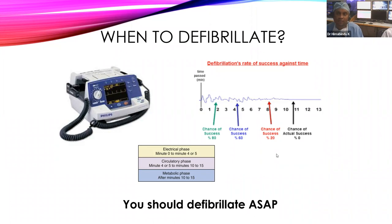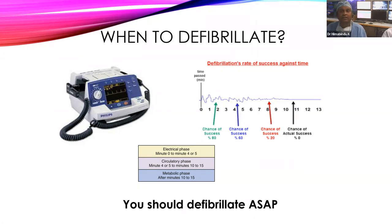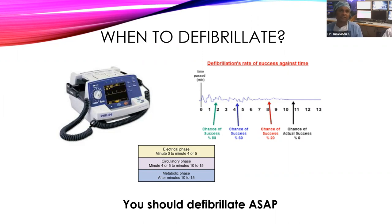Regarding xylocard (lidocaine) in VT: earlier it was used in VT, but nowadays it does not have much role. The decision depends on whether it is VT with pulse or without pulse, and on the patient's stability. For unstable VT with pulse, there is no role for chemical cardioversion — go straight to electrical cardioversion.